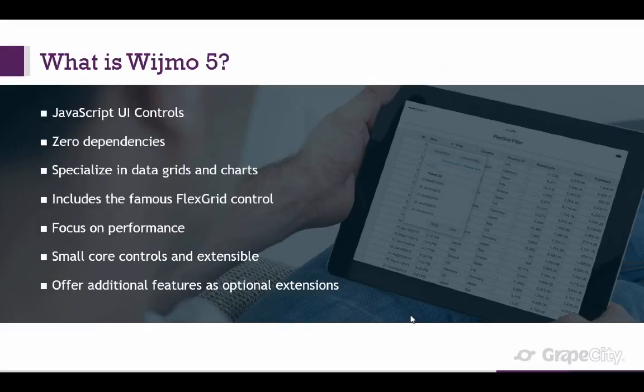So what is Widgmo 5? Widgmo 5 is our set of JavaScript UI controls. We have zero dependencies, so if you want to use our UI components, you just need our own files, and they're very small. We specialize in data grids and charts — it's our specialty. We have a long history of developing them, especially our famous FlexGrid control. We've been developing that since the days of Visual Basic and continued in many different platforms, and now it's finally in JavaScript.